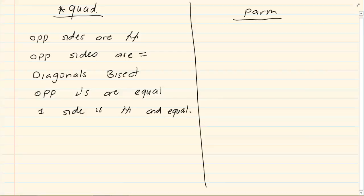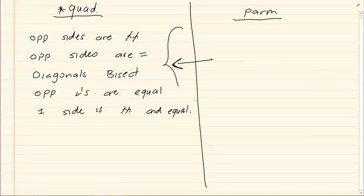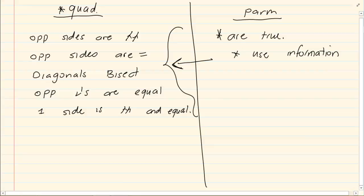Now if I give you a quadrilateral and you can prove that any of these is true, then that would be a parallelogram. However, sometimes they would give you a parallelogram and ask you to prove that any one of these five are true. Now when they ask you to do that, you can use the information they give you, but you may not use what they want you to prove.